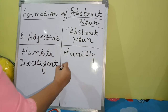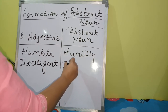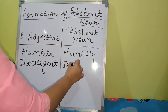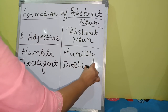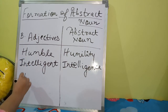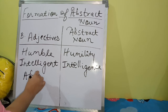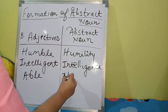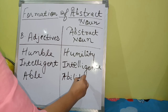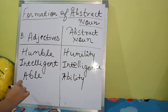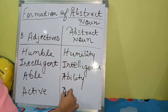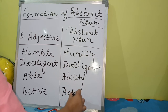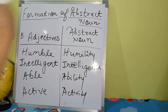More adjective to abstract noun examples: 'intelligent' gives 'intelligence,' 'guilty' gives 'guilt,' 'able' gives 'ability,' and 'active' gives 'activity.' So adjective words can also be used to form abstract nouns.